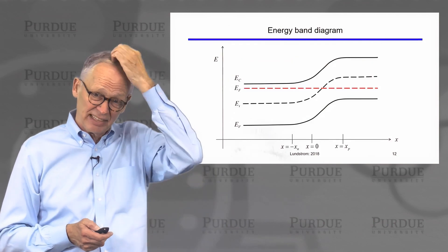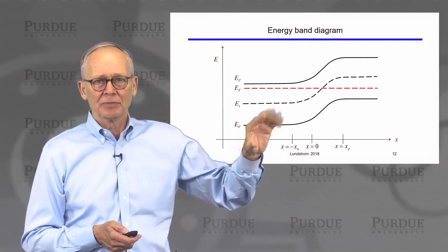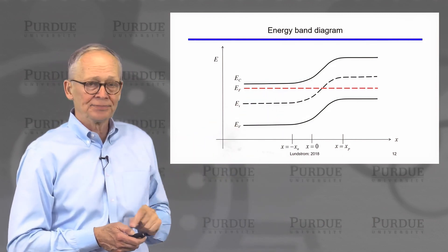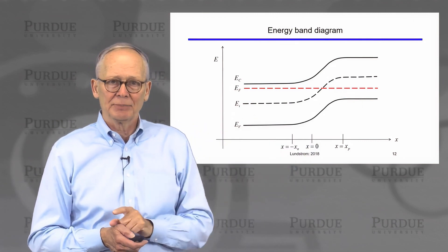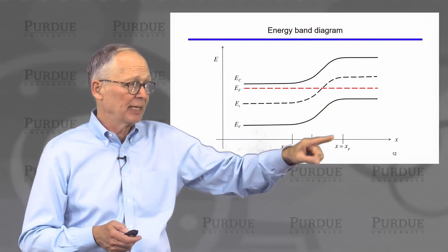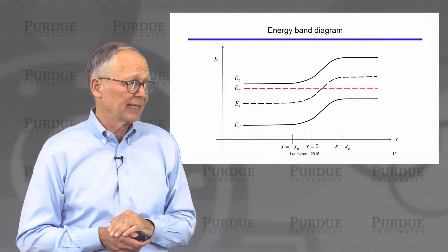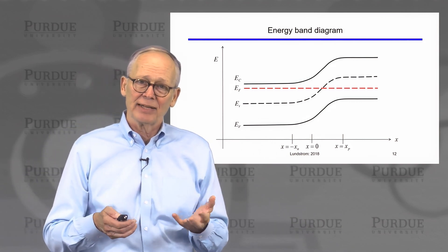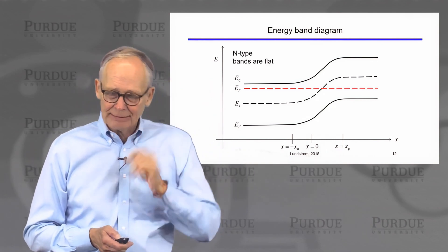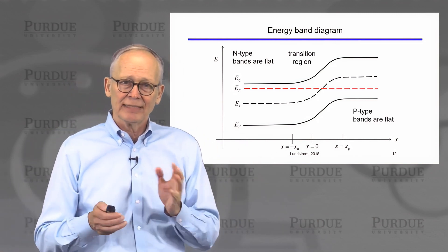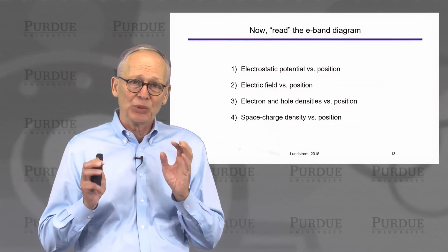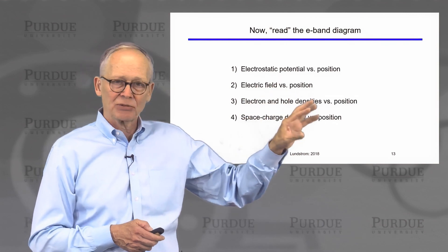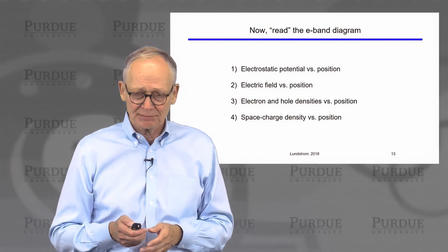You can extract quite a lot of information from an energy band diagram. Way out to the left, we just see a uniform N-type semiconductor — N-type because the Fermi level is near the conduction band, well above the intrinsic level. Over to the right, we see a uniform P-type semiconductor, with the Fermi level well below the intrinsic level and closer to the valence band. In the transition region everything connects smoothly with no discontinuities. That's the equilibrium energy band diagram of the NP junction. Now we want to read it to extract the electrostatic potential, electric field, electron and hole densities, and space charge density versus position.